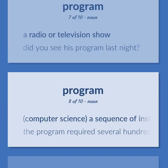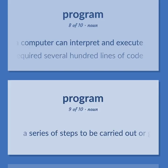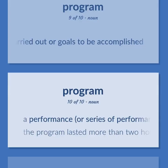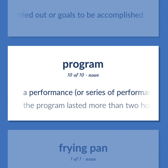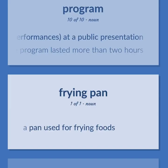Computer science: a sequence of instructions that a computer can interpret and execute — the program required several hundred lines of code. A series of steps to be carried out or goals to be accomplished. A performance, or series of performances, at a public presentation — the program lasted more than two hours.